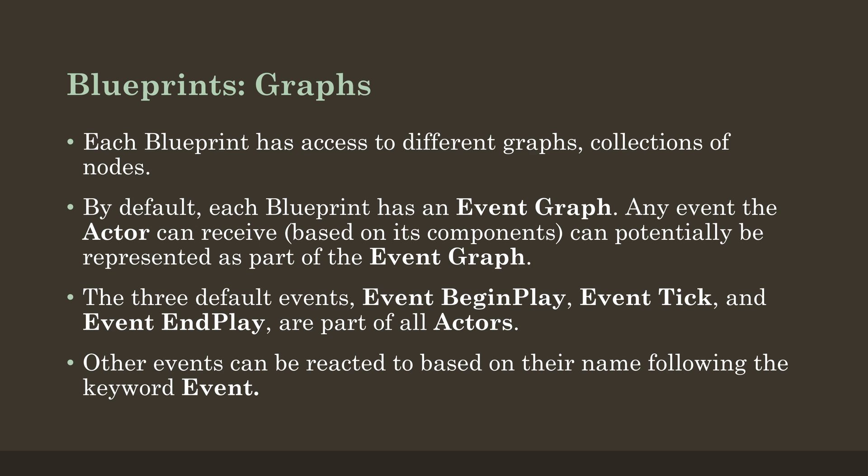The three default events are Event Begin Play, Event Tick, and Event End Play, available to all actors — the beginning of play, the refreshing of things, and the ending of play. Other events can be reacted to based on their names, but they follow the keyword 'event'. This is a visual scripting language, so not only are there types, colors, and icons, there are also keywords. Events have the event keyword preceding whatever the event is: Event Begin Play, Event Tick, or Event End Play — which would also be in red and have the icon representing the event node within the graph.